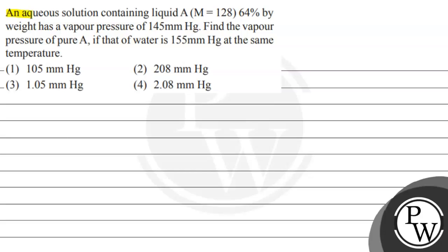Hello, let's read this question. An aqueous solution containing liquid A with molar mass equal to 128, 64% by weight, has a vapor pressure of 145 mmHg. Find the vapor pressure of pure A if that of water is 155 mmHg at the same temperature. The options given are: 105 mmHg, 208 mmHg, 1.05 mmHg, and 2.08 mmHg.